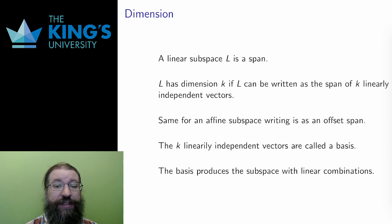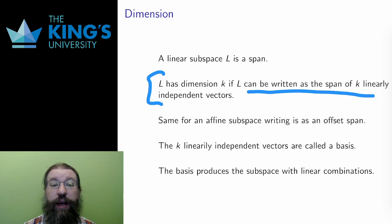Remember that I said that vectors were linearly independent if they all fundamentally had different directions. Well, that's the key. A linear subspace has dimension k, by definition, if it can be written as the span of k linearly independent vectors. And the same is true for an affine subspace, writing it as an offset span. The offset doesn't affect the dimension at all, it just moves the object somewhere.